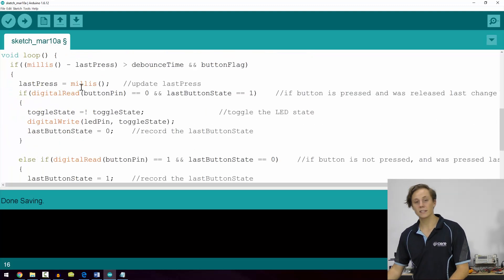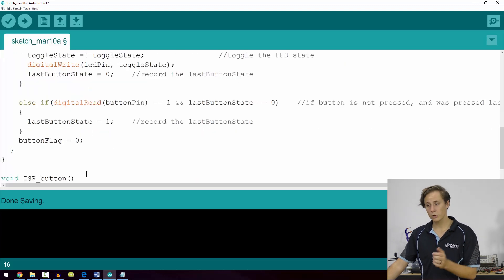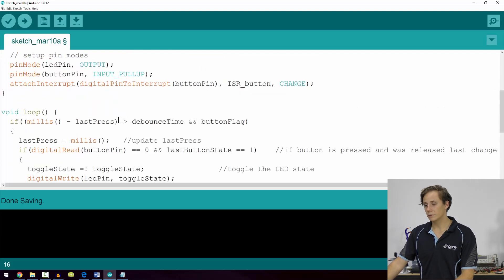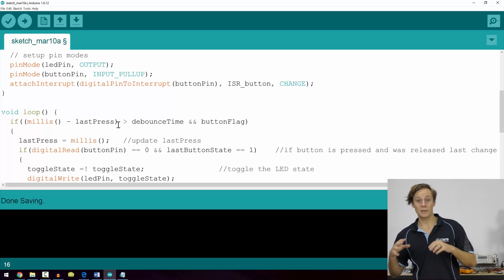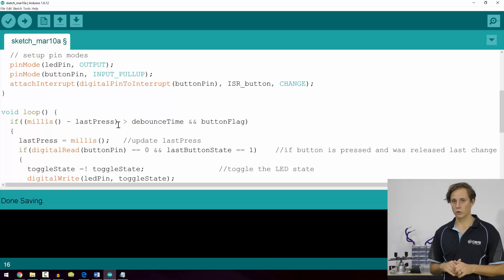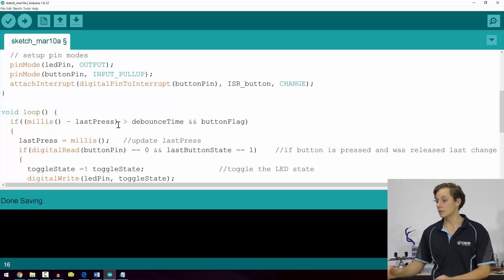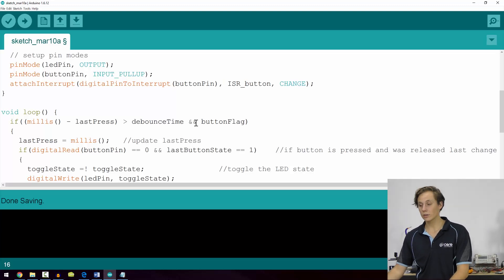Now in this void loop, we have the exact same set of instructions that we'll be using for standard debouncing, so we won't go through that too much. The only difference is we've added an extra condition to determine whether our Arduino enters into this whole debouncing function. As normal, before we had millis minus last press is greater than debounce time; if that is true, then we're going to run this section of code, and that was ensuring that it could only be run at a certain frequency, filtering out that noise.